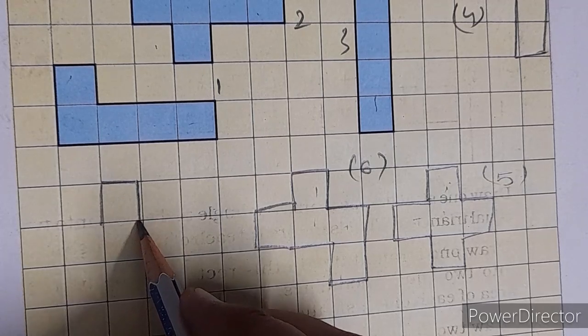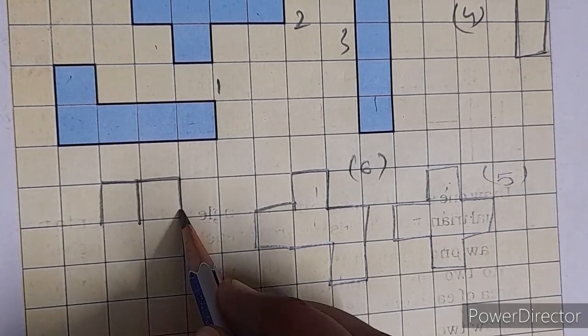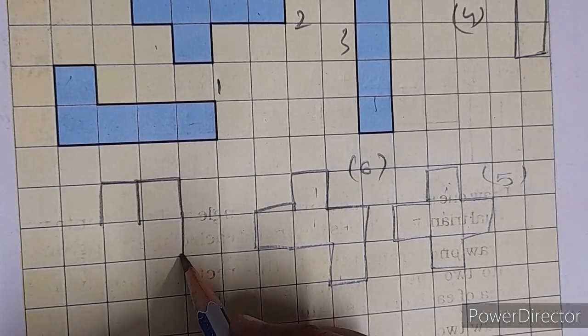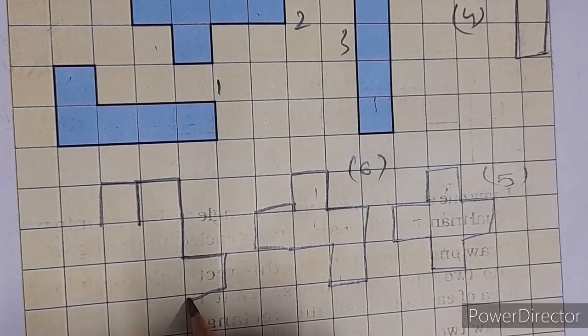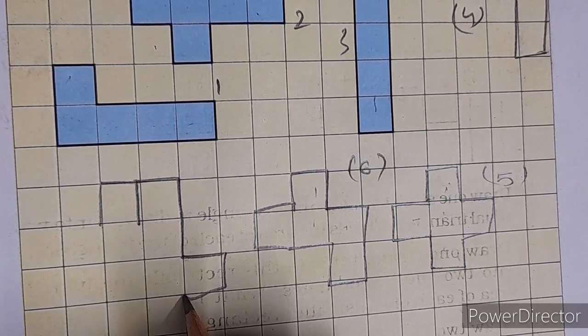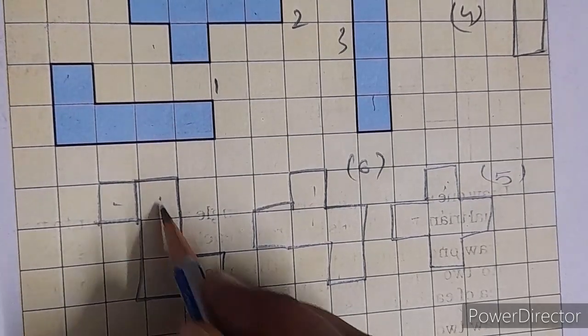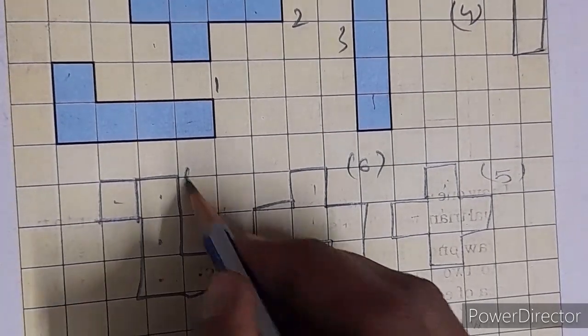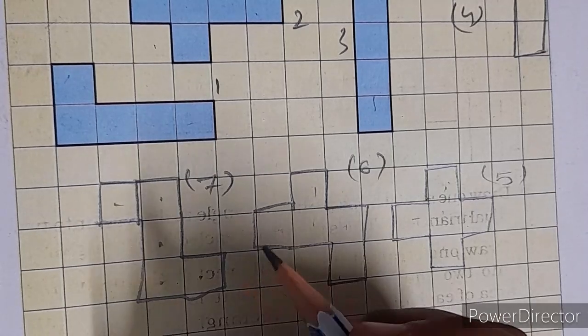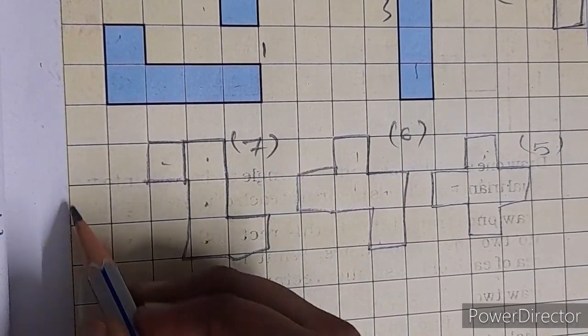Next we will draw 1, 2, 3, 4, 5, 6. This is our 6 number. 1, 2, 3, 4, 5. This is our 7 number.